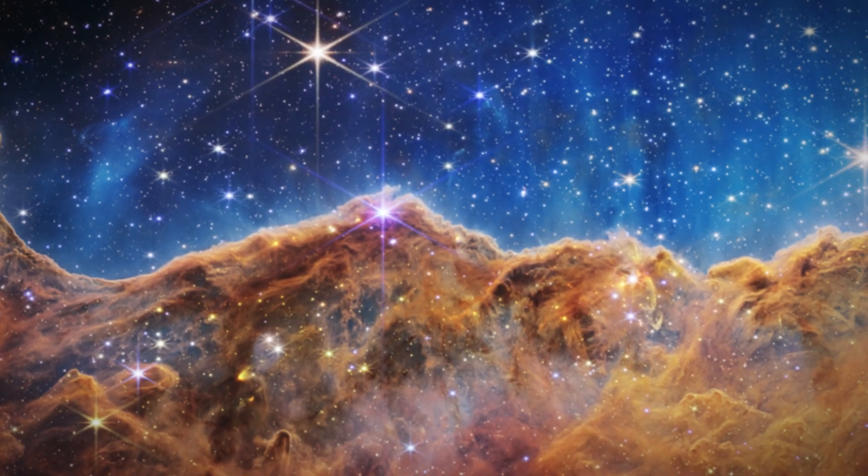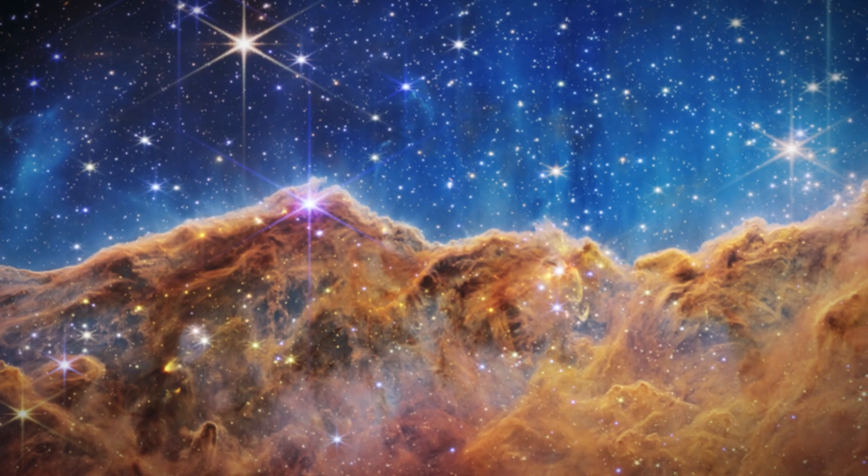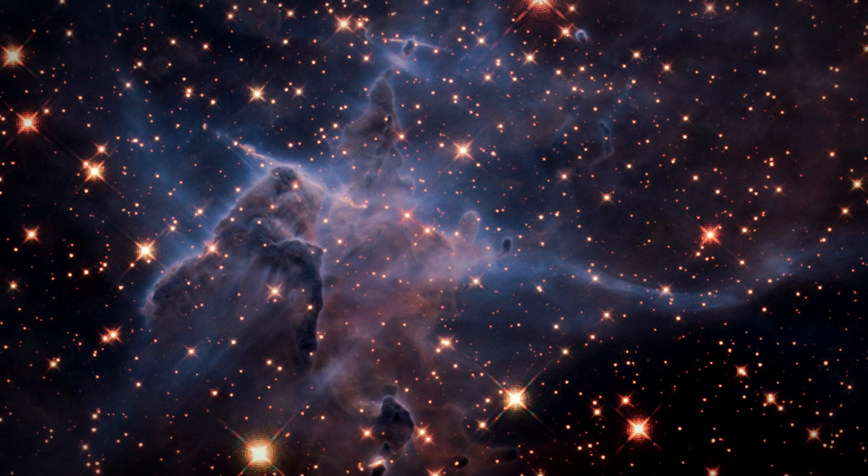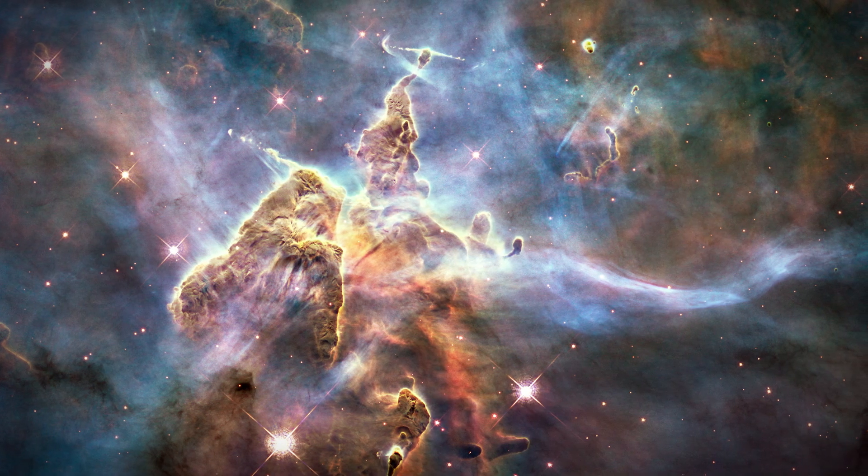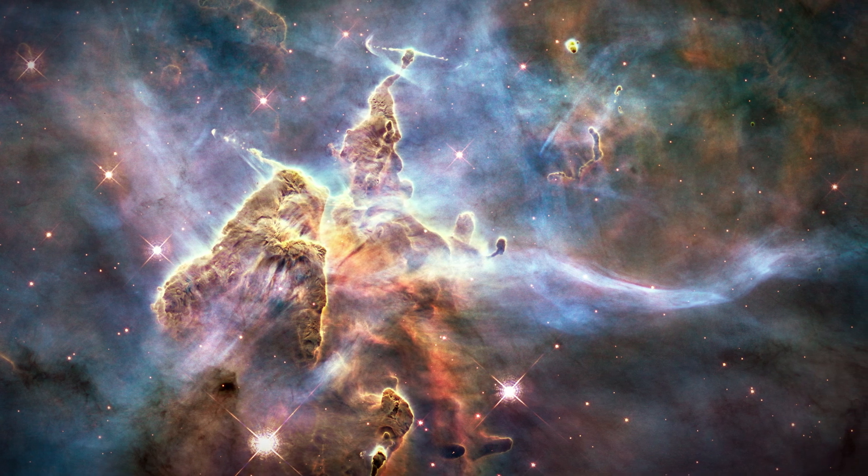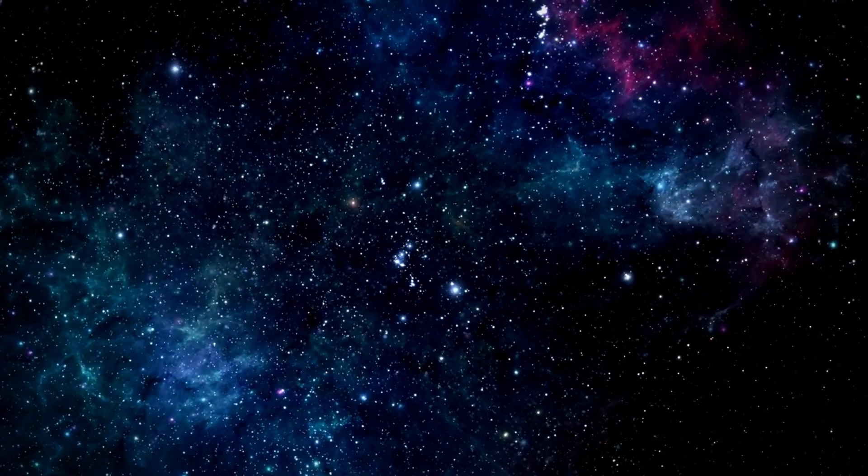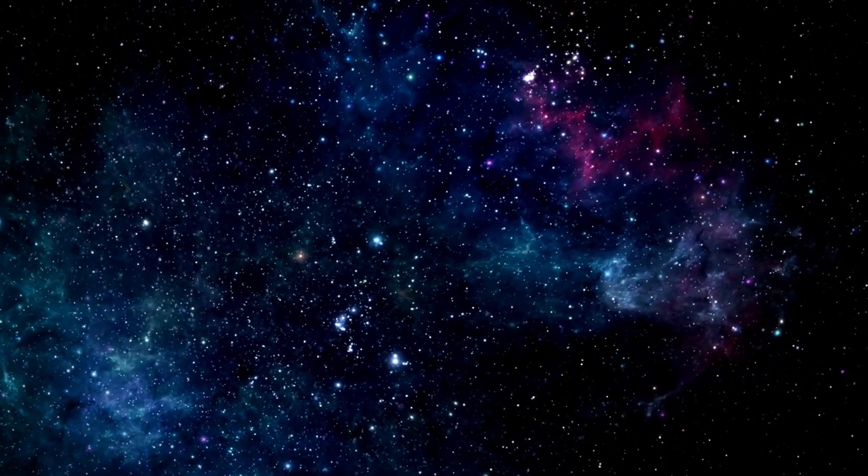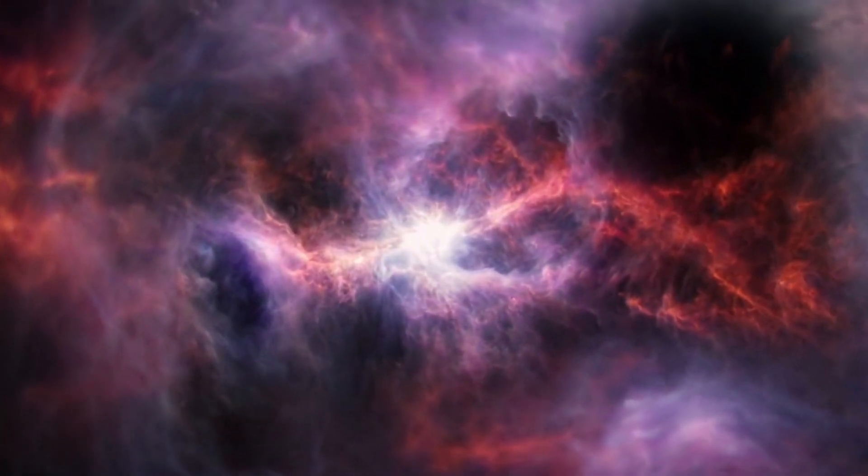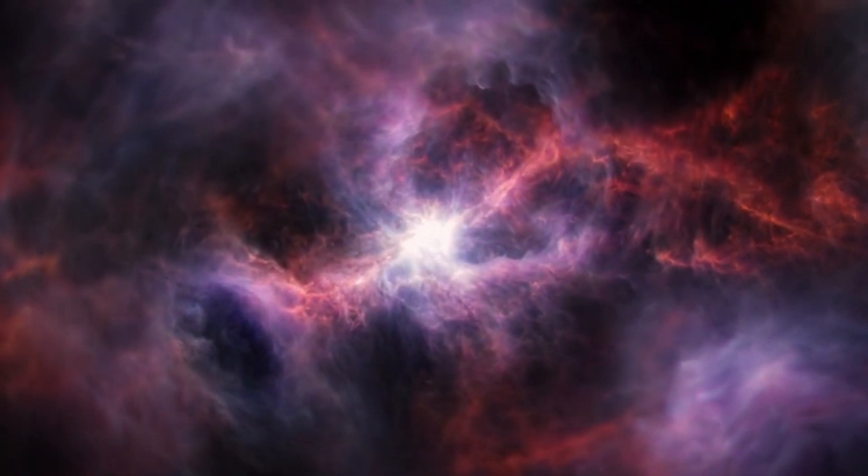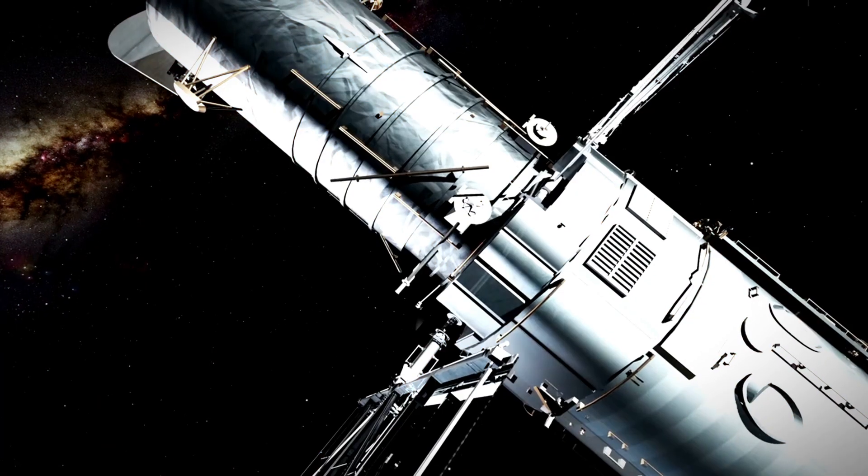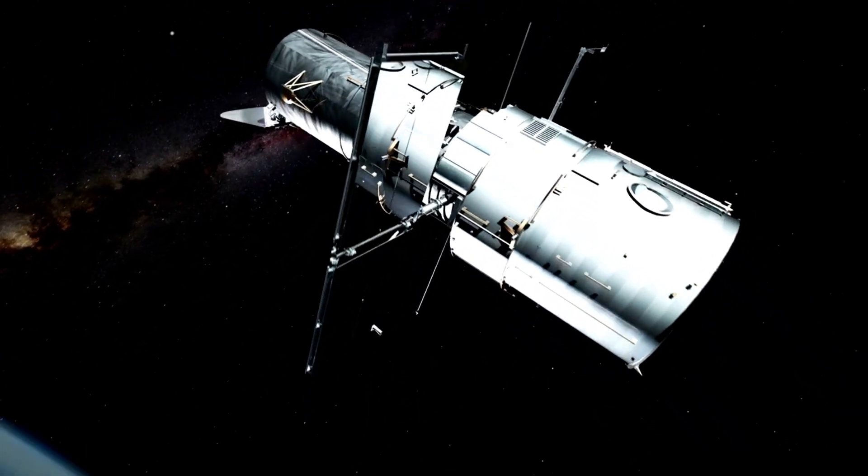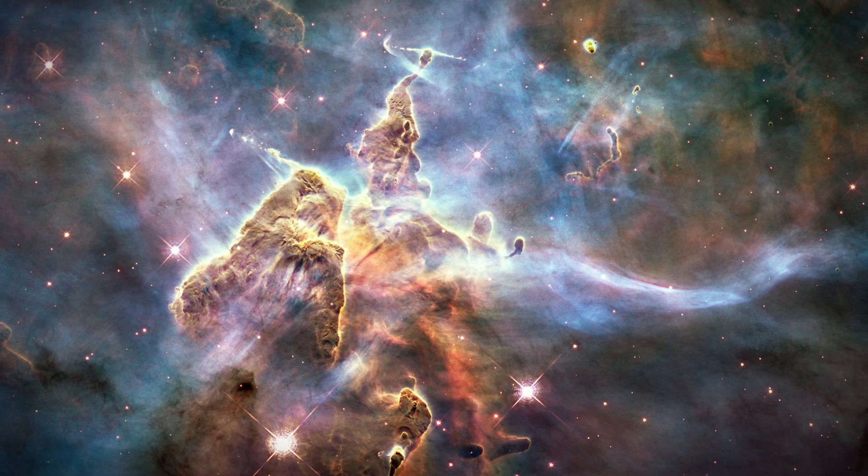Herbig-Haro 901 is a massive pillar of gas and dust that lies within the Carina Nebula, a huge region where new stars are born. The pillar is several light years in height and hosts a few massive young stars. These stars are very energetic and emit powerful jets of gas that pierce through the surrounding cloud. The jets create shock waves that heat up the gas and make it glow in different colors. The Hubble Space Telescope captured this image of Herbig-Haro 901 in 2007, revealing its intricate structure and beauty.